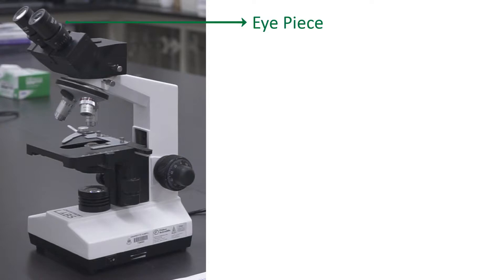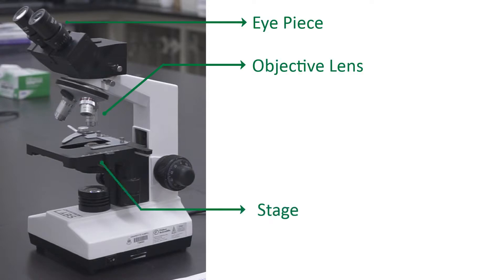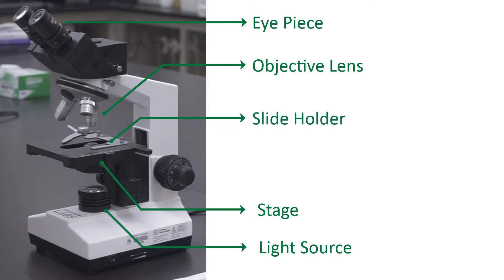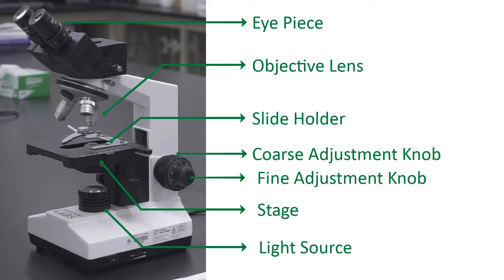First, let's look at the major components of a microscope. They are the eyepiece, objective lens, stage, slide holder, light source, coarse adjustment knob, and fine adjustment knob.